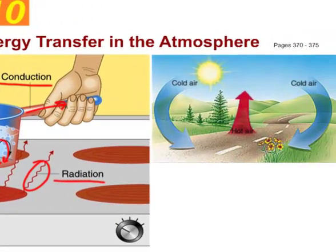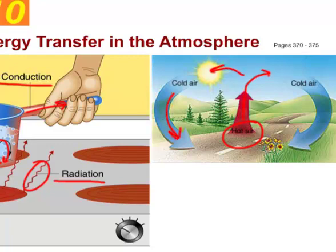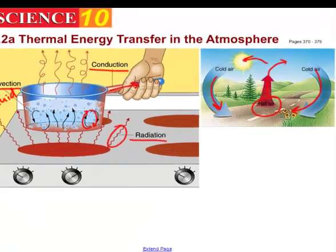Here we have a situation where solar radiation heats up the surface of an asphalt road and the heat rises. As the heat rises it cools and begins to descend again as cooler air. The cooler air comes back down to fill in the space left when the hot air rose, so we get convection currents developing in any fluid — air or liquid — where heating is uneven.